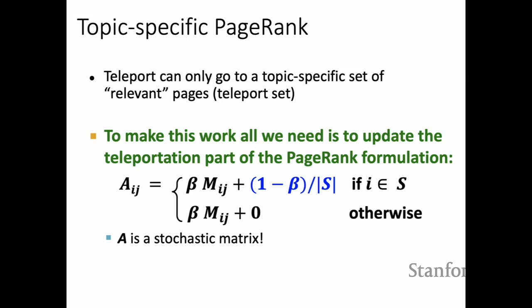Topic-specific PageRank differs from regular PageRank in that instead of teleporting to all nodes, we teleport only to some specific set of nodes. In this case, the teleportation term becomes (1 - beta) / |S|, where S is the specific set of nodes to teleport to. The rest is the same, and we use power iteration to compute all the PageRanks.